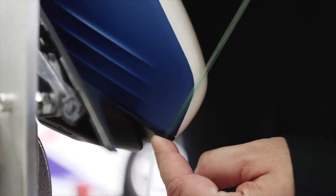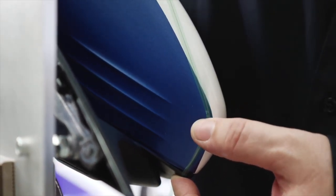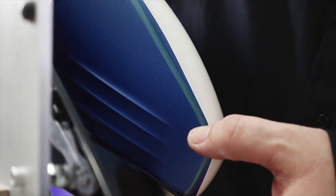Once again, using knifeless tape design line, apply the tape approximately 1mm from the edge of the film. Press the knifeless tape onto the film.